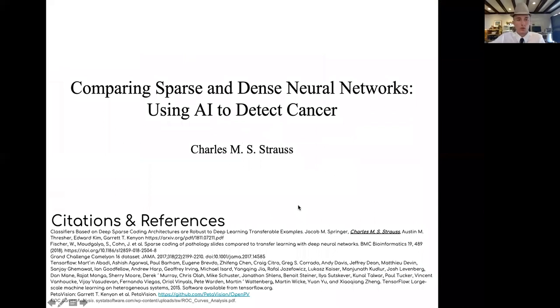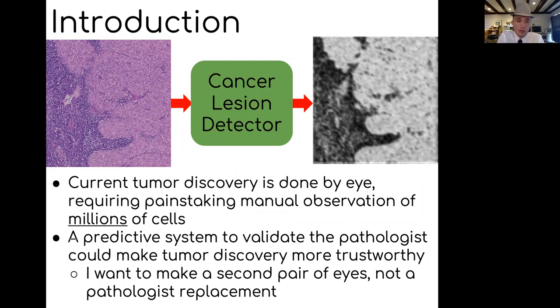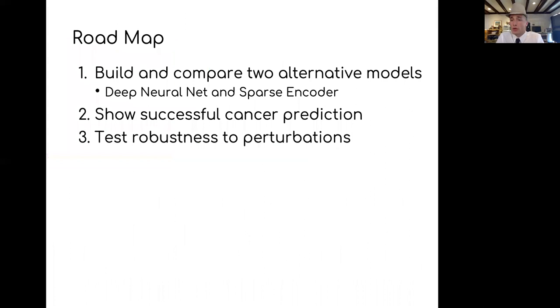I'm Charles and I'm using AI to detect cancer. Currently, tumor discovery is done by pathologists who look over millions of cells for hours in order to find the tumors. This purple image on the left is actually a pathology tile and they find the tumors which are shown by this annotation, where white is tumor and black is non-tumor. So I wanted to make a model that could do this - take a tile of pathology slide and turn that into a useful annotation for a pathologist.